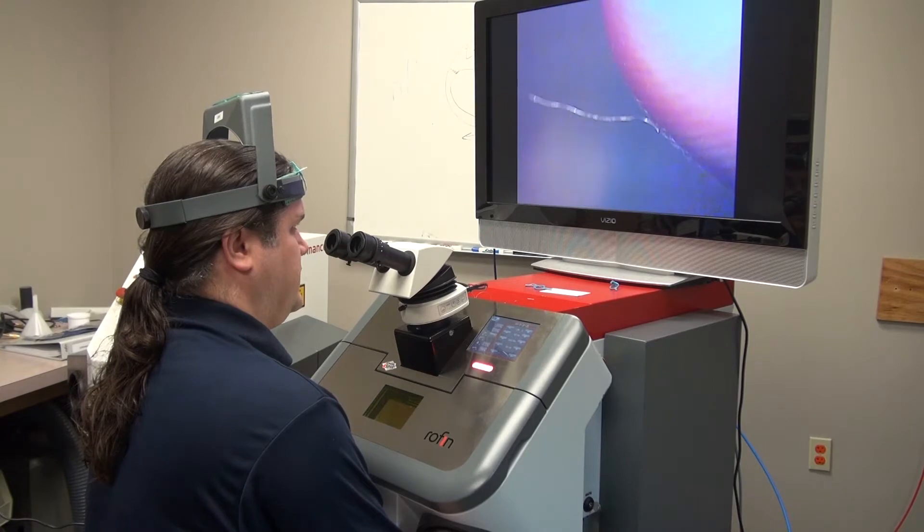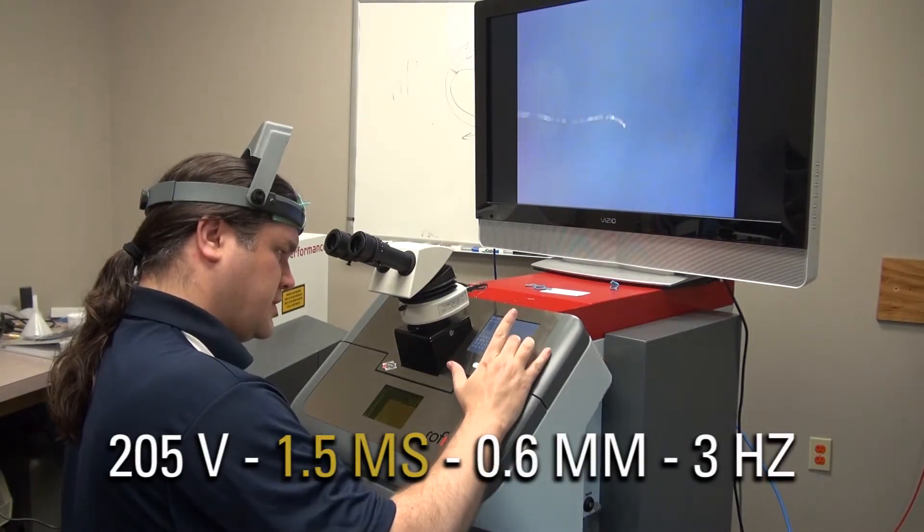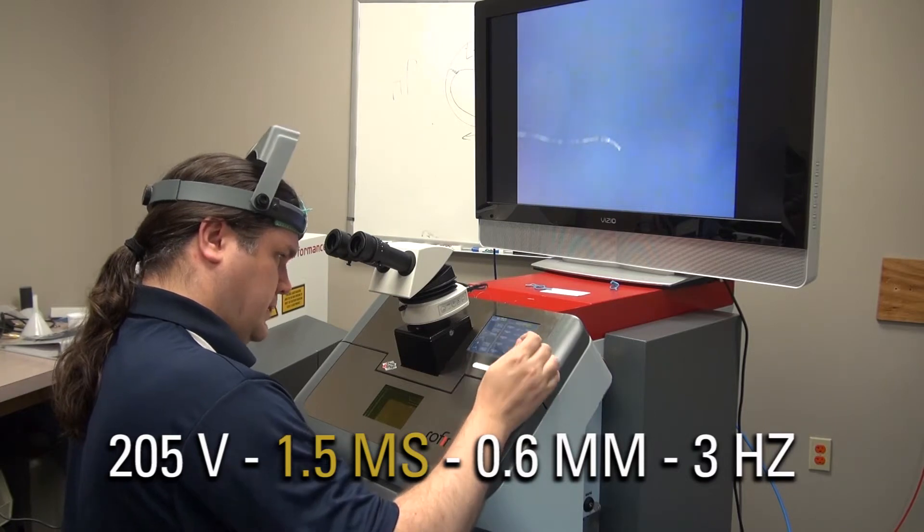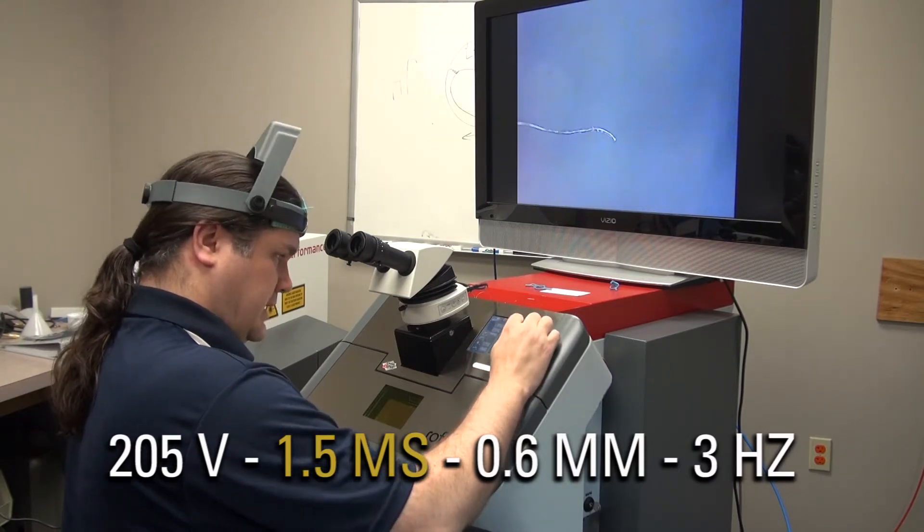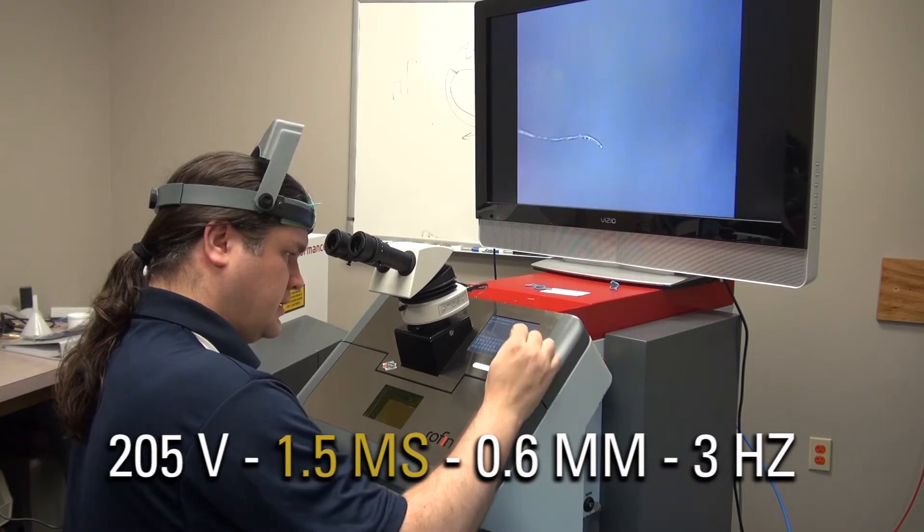So now to do incredibly thin items, I use my normal parameters but I lower down the milliseconds. Say instead of using four milliseconds, I'll use 1.5.